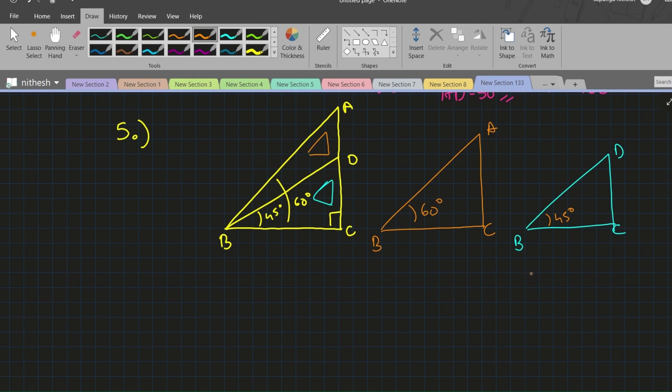The value of BC is given as 40 centimeters. Opposite to 60 degrees will be the hypotenuse, and over here opposite to 90 degrees will be the hypotenuse.